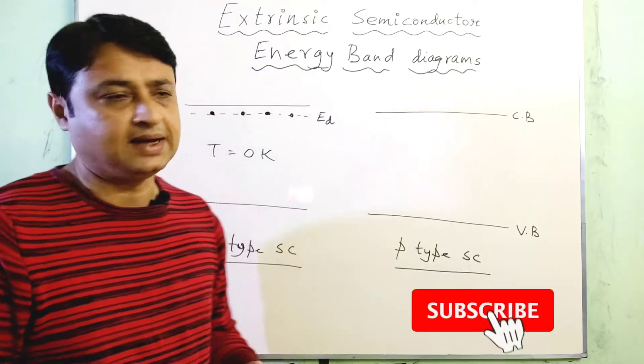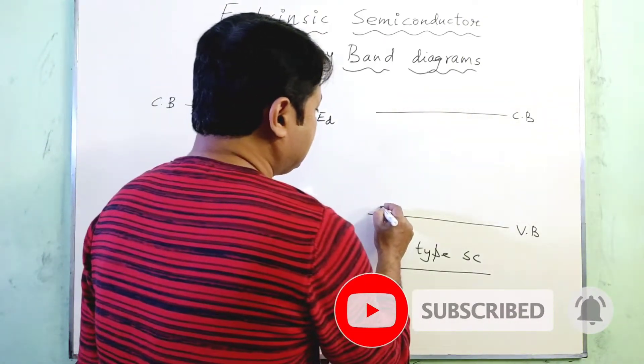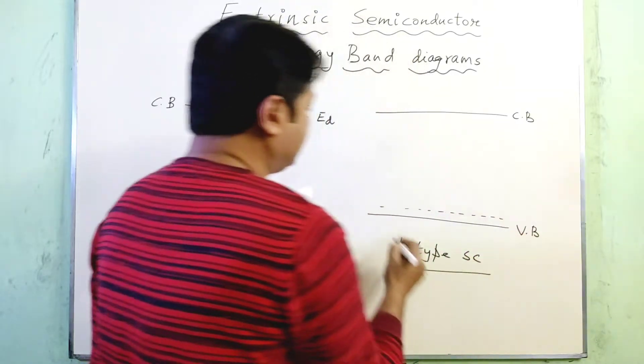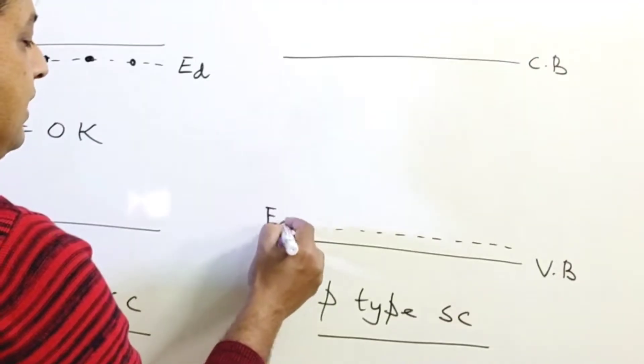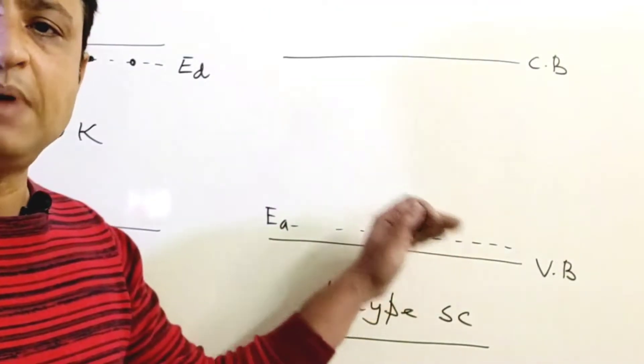This will create an impurity level which is actually the acceptor level, and it lies near the valence band region.